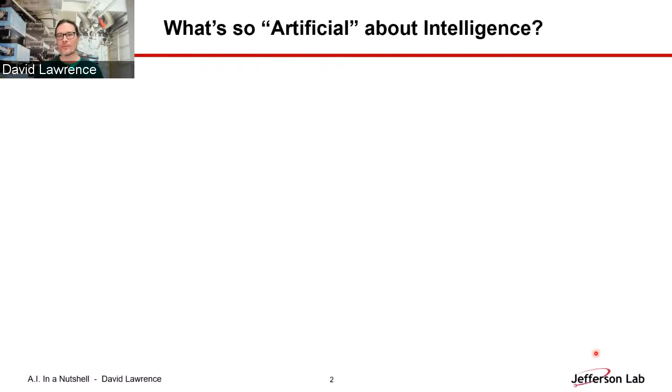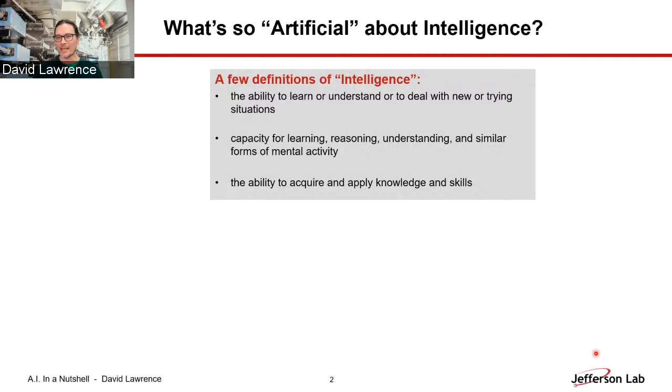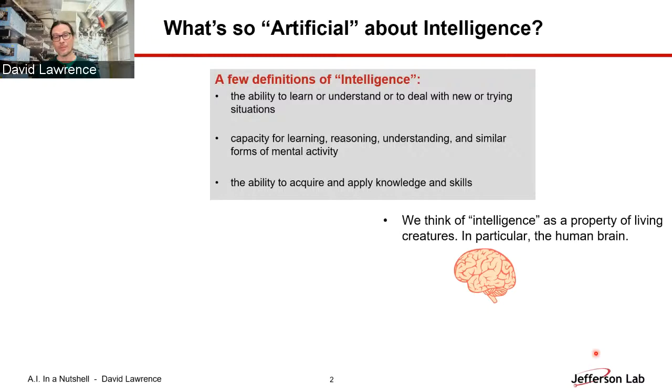So first off, what is artificial intelligence? Well, maybe it's worth it to spend a minute to say what is intelligence? Few definitions that I found are the ability to learn or understand or to deal with new or trying situations, a capacity for learning, reasoning, understanding, similar forms of mental activity, the ability to acquire and apply knowledge and skills. All these things are probably consistent with what you're thinking about the word intelligence. But artificial, when we think of that, means something that's man-made. So intelligence we usually attribute as a property of a living creature, in particular the human brain. But when it's artificial, it's something that we've made to try to mimic a thing that is occurring in nature.